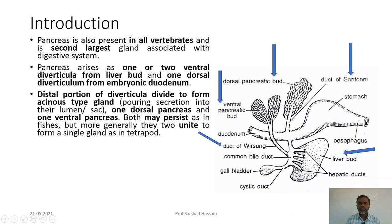After the formation of the dorsal and ventral pancreas, sometimes both persist in the adult; sometimes they unite and only one pancreas may be present in the adult.